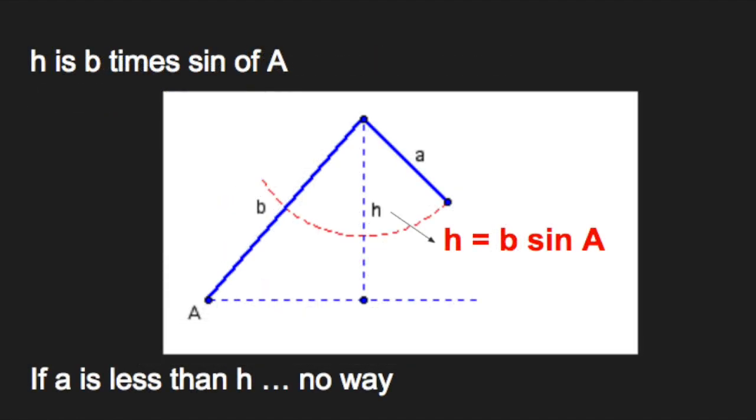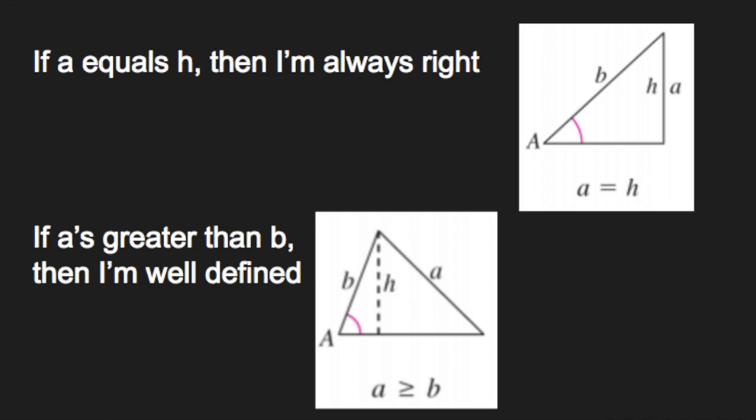H is B times sine of A. If A is less than H, no way. If A equals H,